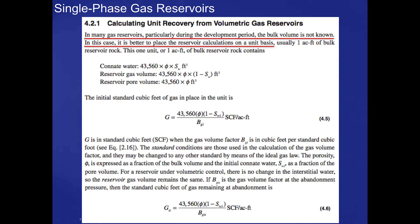In many gas reservoirs, particularly during the development period, the bulk volume of the reservoir is not known. In those cases, we will calculate what we call the initial gas in place on a unit basis — typically on a one acre-foot basis. Equation 4.5 in this slide is the initial standard cubic feet of gas in place on a per acre-foot basis.